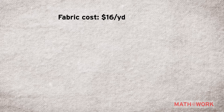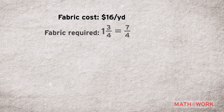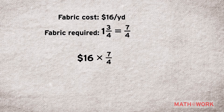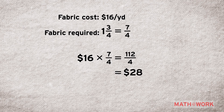Since the fabric costs $16 a yard and you're buying 1 and 3 fourths yards, your cost will be 16 times 7 fourths, which equals 112 fourths. That can be simplified to $28.